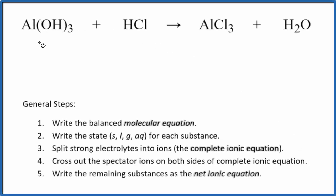In this video, we'll write the balanced net ionic equation for AlOH3 plus HCl. This is aluminum hydroxide plus hydrochloric acid. This is a neutralization reaction.